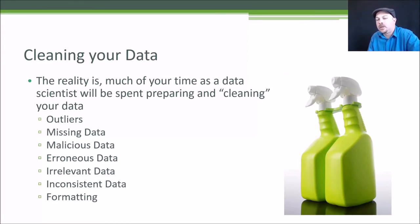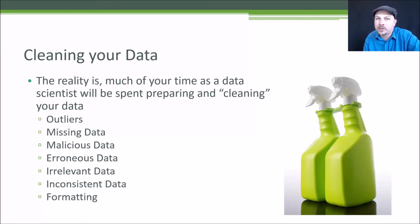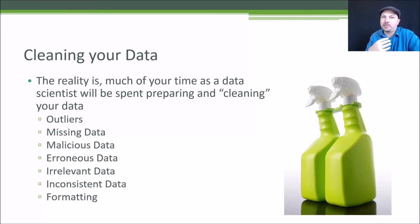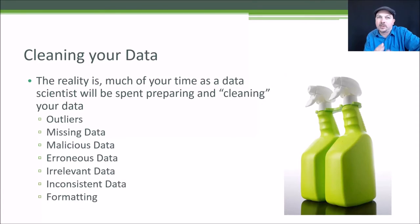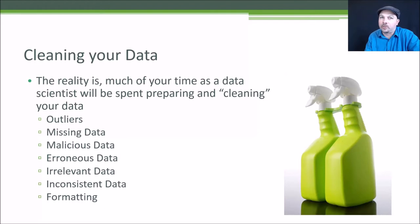One type of problem is outliers — people behaving strangely in your data that, when you dig in, turn out to be data you shouldn't be looking at in the first place. A good example is weblog data where one session ID keeps coming back over and over at a rate no human could manage. What you're probably seeing is a robot — a script scraping your website or even a malicious attack. You don't want that behavior data informing models meant to predict real human behavior.